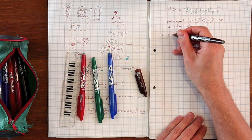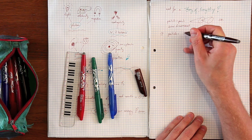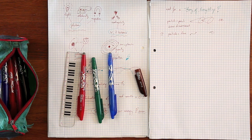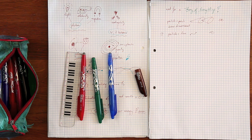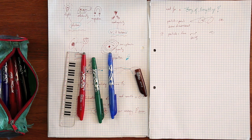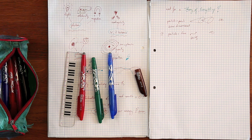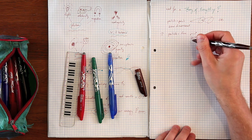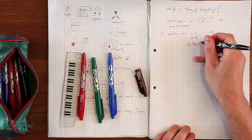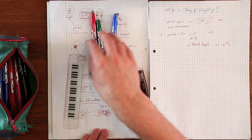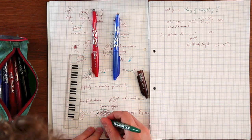String theory changes this assumption and treats every particle as being one-dimensional, a line with a given length. We call it a string. And this has a very nice consequence. If you choose the length of the string to be really, really small, just a bit larger than the spacetime fluctuations, this length is called the Planck length, you get some kind of smoothing effect on the fluctuations.